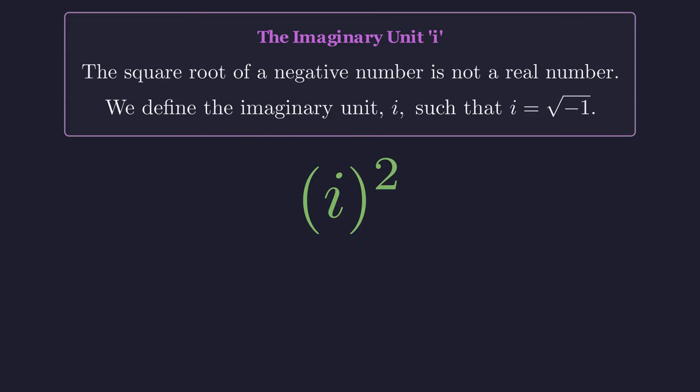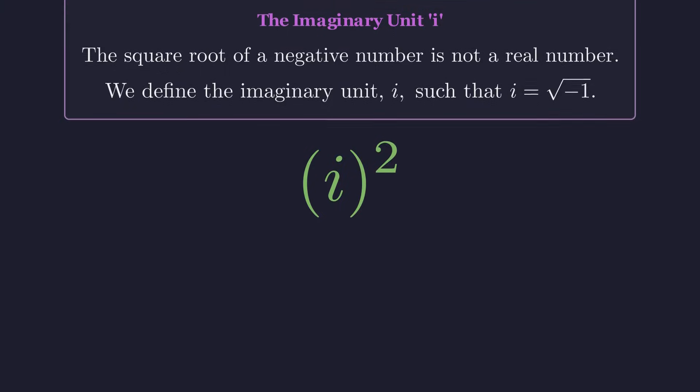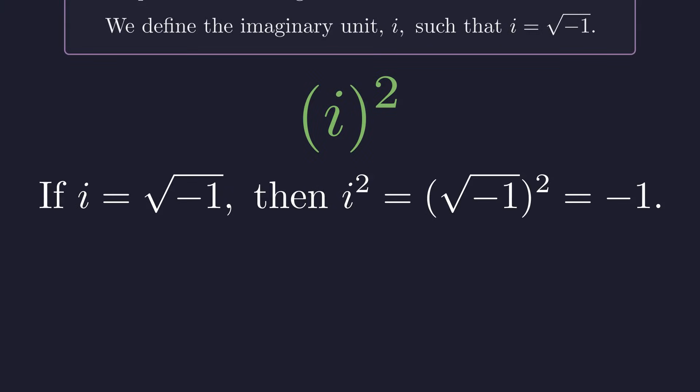Now we have i squared. What does that equal? Well, by definition, i squared equals negative one, so the right side gives us negative one.